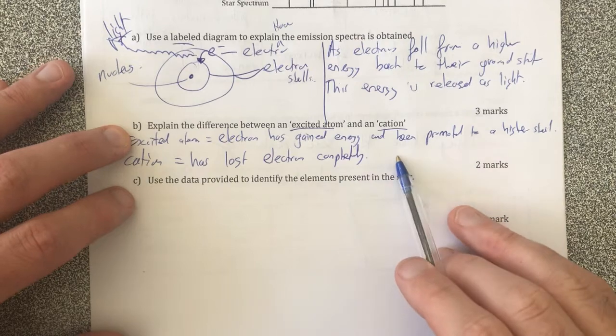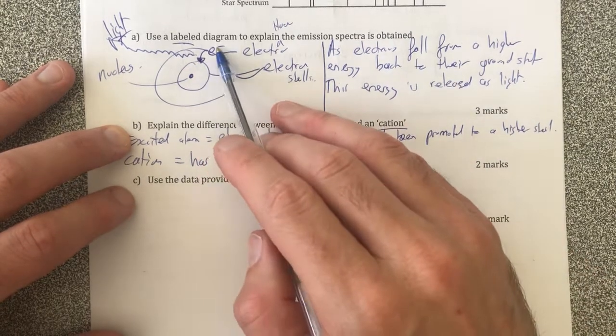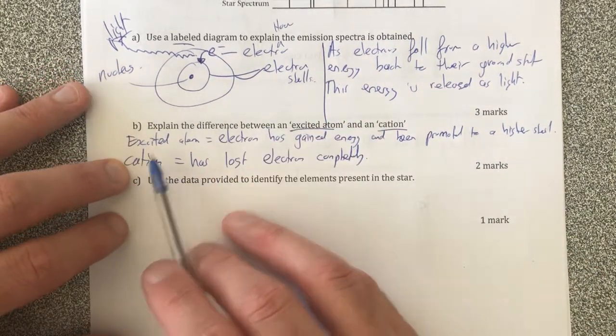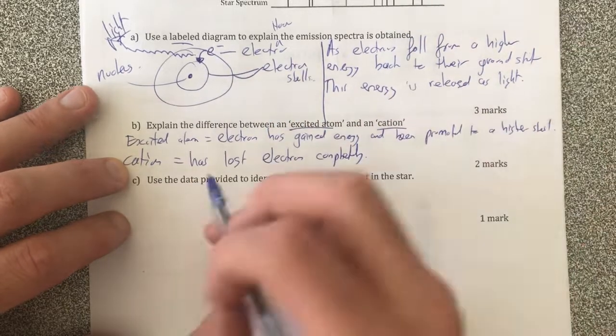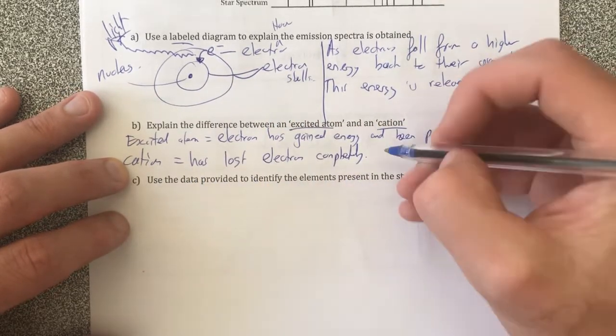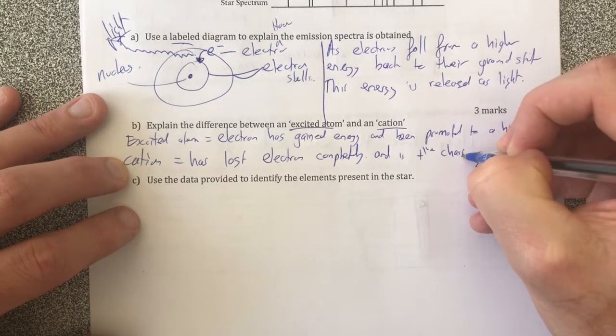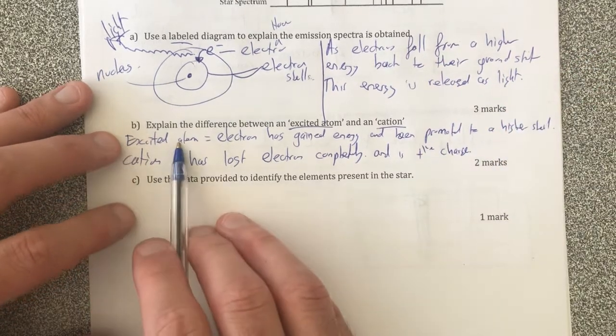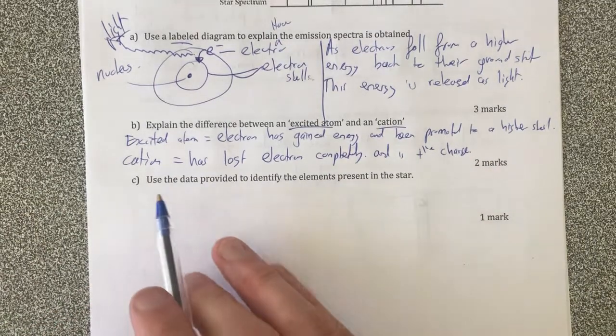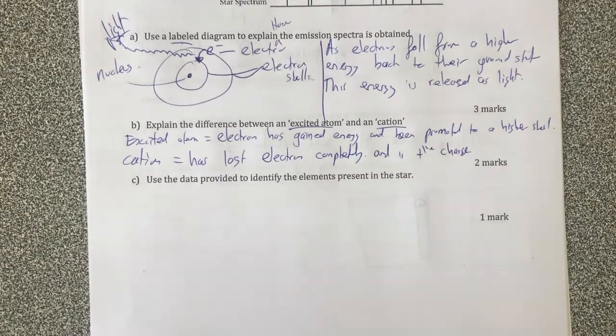Excited atom: electrons get promoted to the higher energy level shell like this. However, the cation is where the electrons can be completely removed, has lost an electron completely, and is positively charged. We'll call that as well. Excited atoms are still neutral, whereas cations are positively charged now.